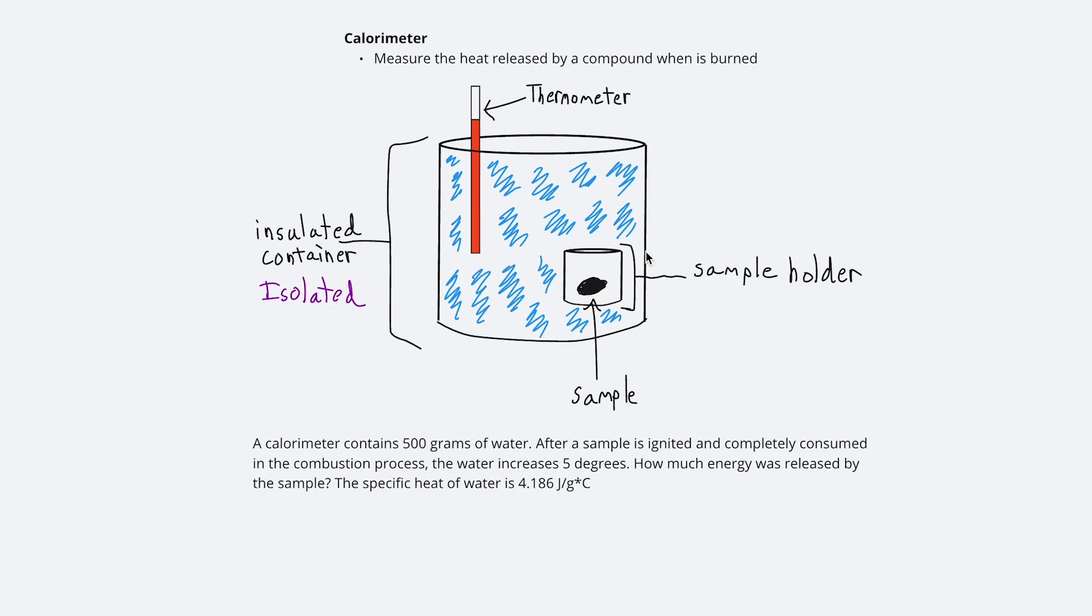There's no heat leaving the large container, and there's no energy or heat coming into that container. Then within that container, there's the sample holder. The sample holder does not allow for any exchange of matter, but it does allow for heat exchange. So this is just a closed system. In fact, we really want the sample holder to exchange energy as fast as possible.